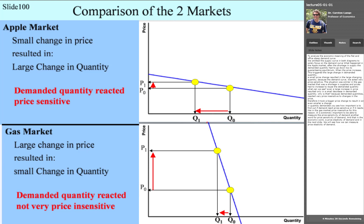You see how important it is to find out if demand reacts price sensitive or price insensitive. For this reason, it is extremely important to be able to measure the price sensitivity of demand. Another word for price sensitivity of demand — and that's the economic word — is price elasticity of demand. In the next slide, we will see how we can measure price elasticity of demand.